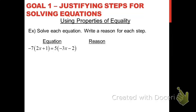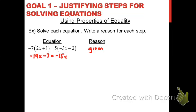We'll do one more example to show another property in use. Try to pause the video and solve this equation and justify it on your own first. As before, the reason you know the original statement is true is that it was given to you. Now the first property you're going to use is the distributive property, which we can apply on both sides of the equal sign — giving us negative 14x minus 7 on the left, and negative 15x minus 10 on the right.